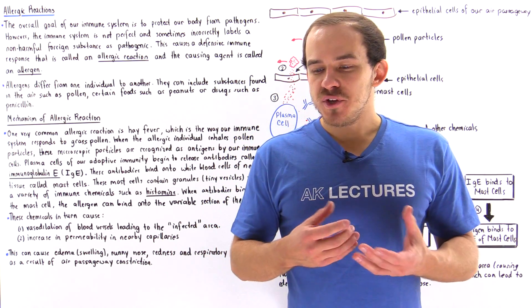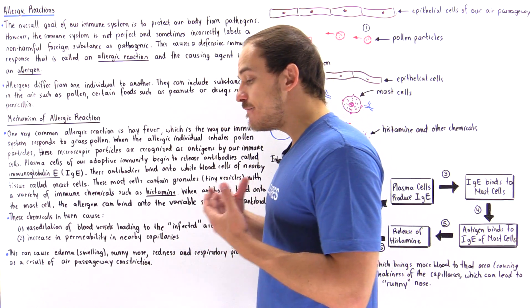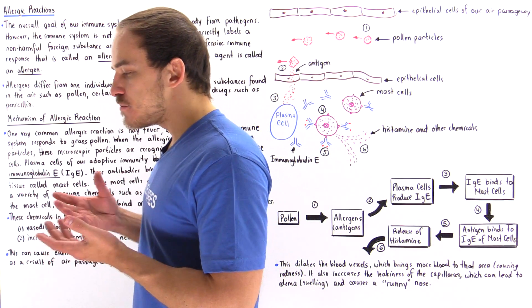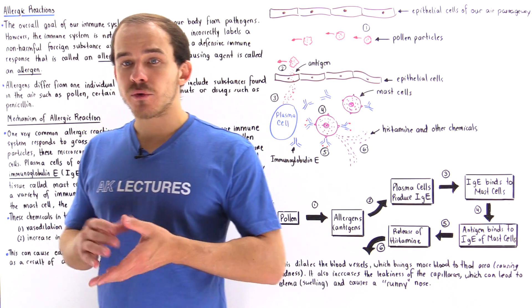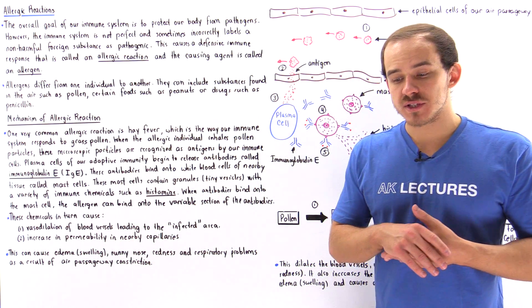The overall goal of our immune system is to protect the healthy cells of our body from invading pathogens such as bacterial cells or viruses.